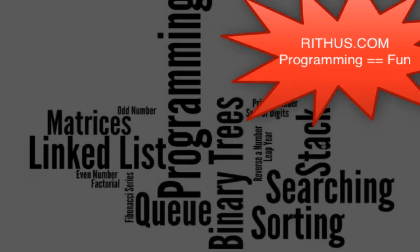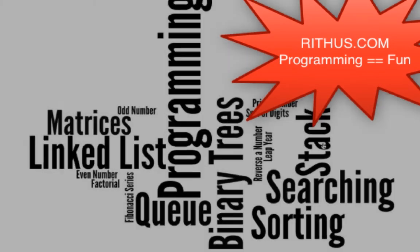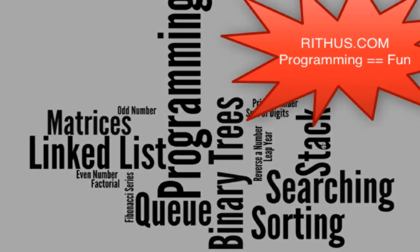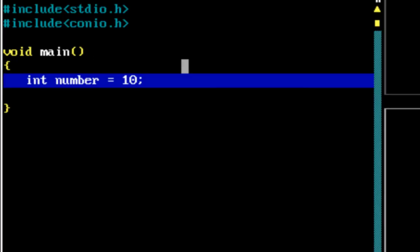Hi there, welcome to this series of videos on programming logic. We would start with simple programs like even numbers, odd numbers, how to find if a number is prime, find factorial of a number, and then move on to complex data structures and algorithms. In this video, let's write a program to find out if a number is odd or even.